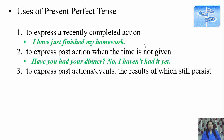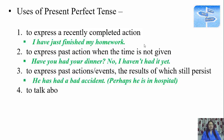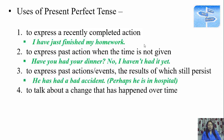The third use is to express past events the results of which still persist. For example, 'He has had a bad accident.' The result of having a bad accident is perhaps he is in hospital, or he has fractured his arm. Here, 'had' is the main verb and 'has' is the helping verb.